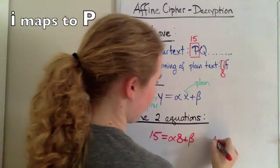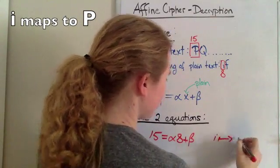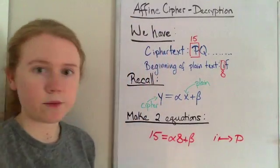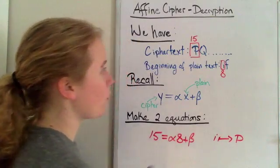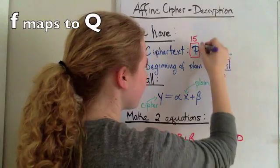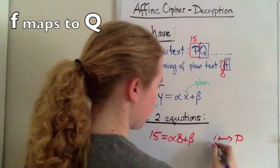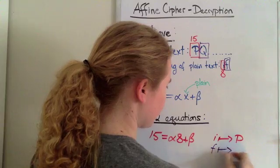We get this because we know I goes to P in this case, and that's how we got that, so we know that this is true. Now we also know that F right here goes to Q. F maps to Q.